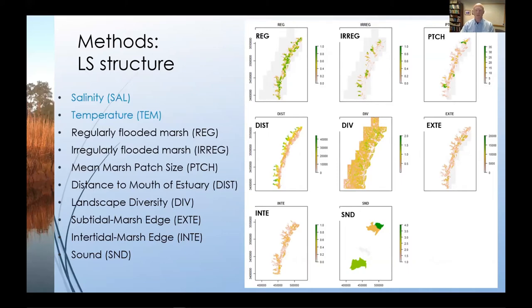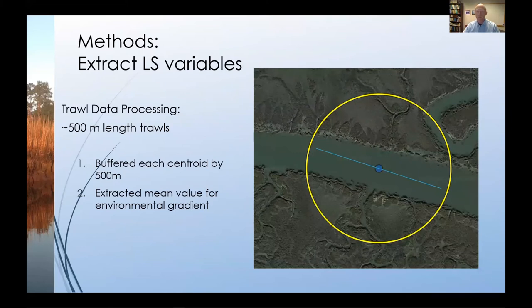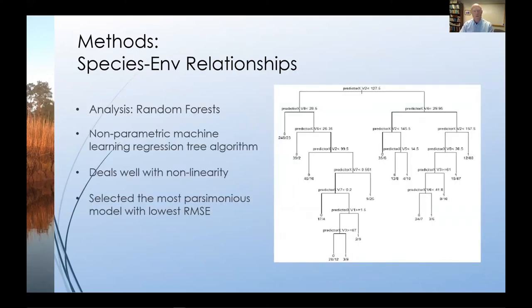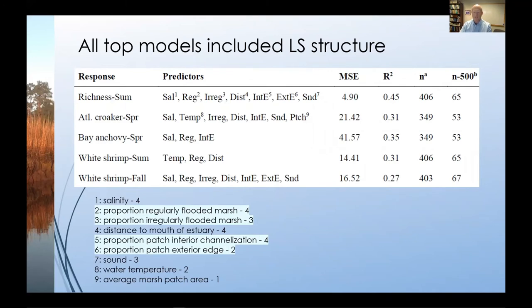We calculated seven additional landscape metrics we anticipated would change with sea level rise. Mean values of each variable were then extracted from a 500-meter radius surrounding each trawl location. We used a model selection approach with a random forest algorithm, selecting the most parsimonious model with the lowest root mean square error. The take home is that landscape structure was important for describing fish richness and abundance for these species. The proportion of regularly flooded marsh, irregularly flooded marsh, and some metrics having to do with edge density or the proportion of edge to area were as important as salinity and temperature in describing richness and abundance of these three species.